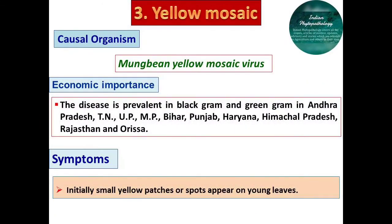Yellow mosaic is also a common disease found in bean crops. Its causal organism is Mungbean Yellow Mosaic Virus. This disease is prevalent in all bean crops all over India, particularly in major bean-growing states.